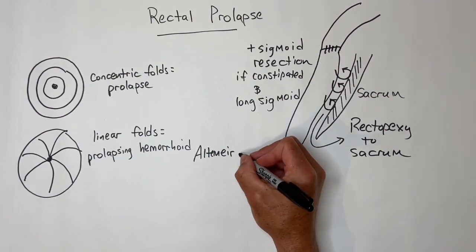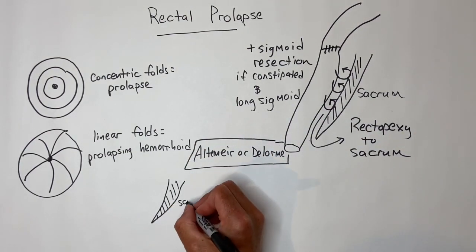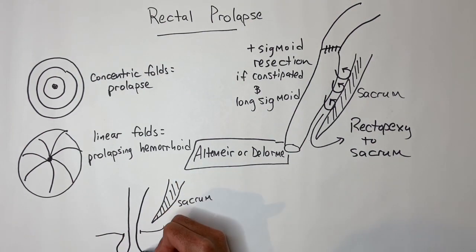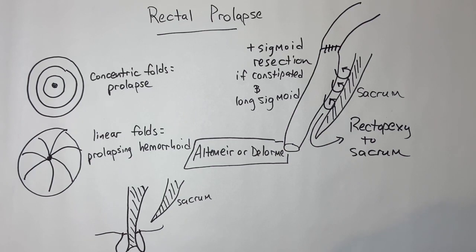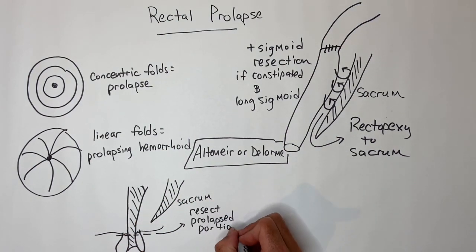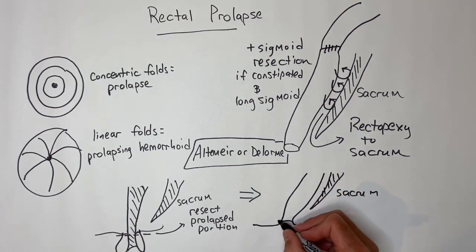In a poor operative candidate, an old frail person say, these are where you talk about the Altmeier or the Delorme procedure. These are basically resection of the prolapsed rectum from the perineum. In an Altmeier, you do a true coloanal hand-sewn anastomosis. In a Delorme, you do a mucosal resection with a muscular plication.